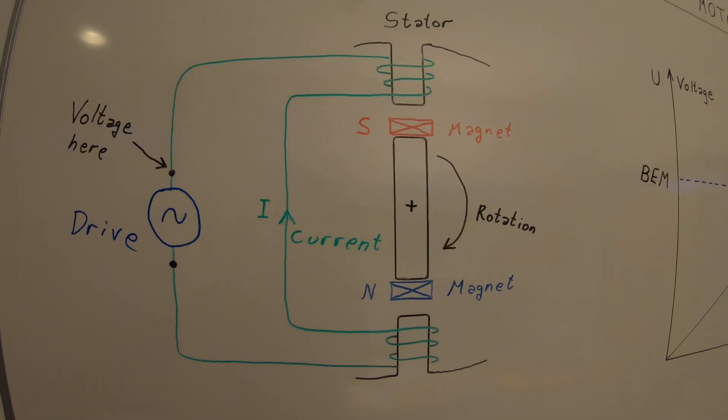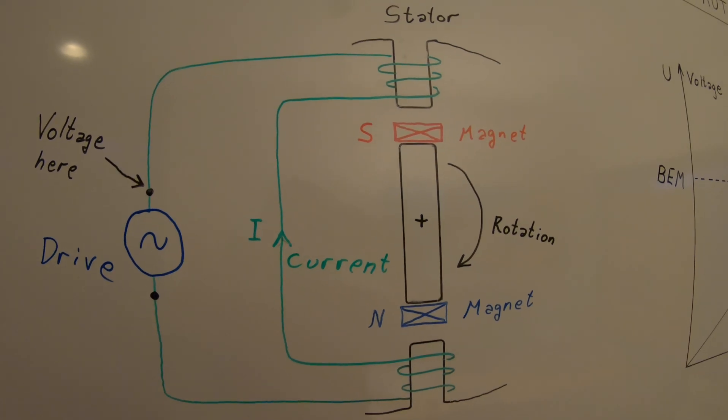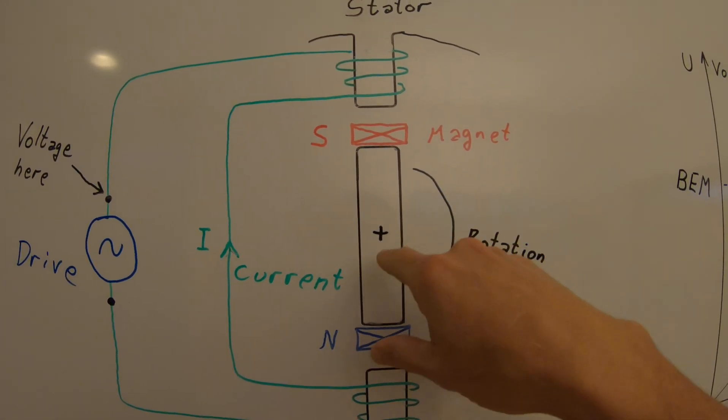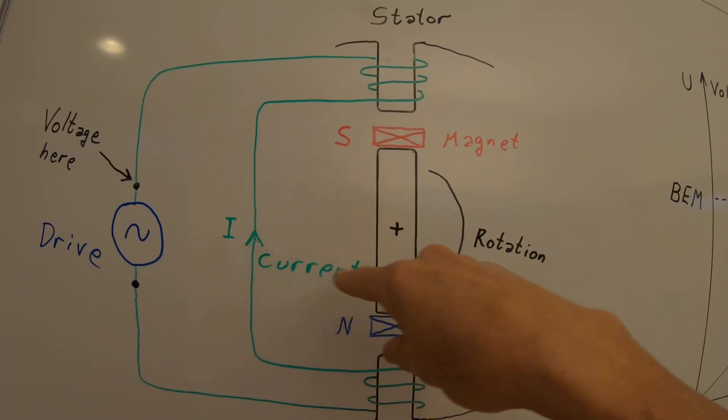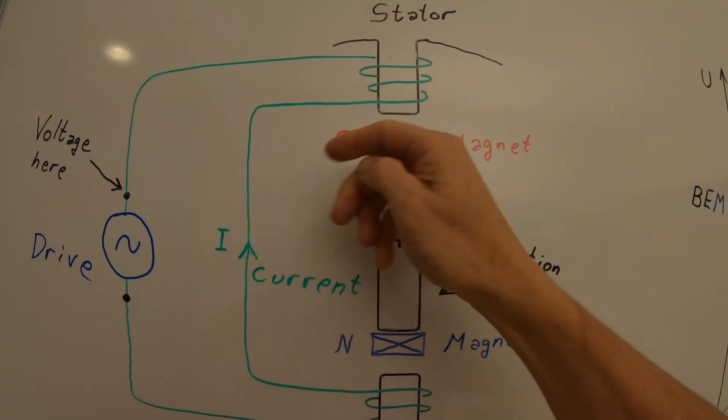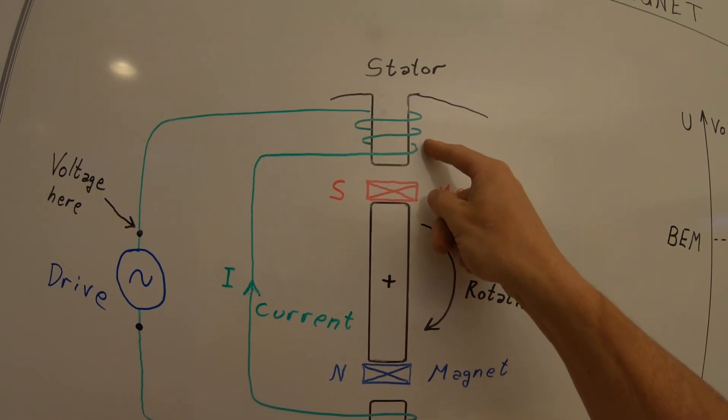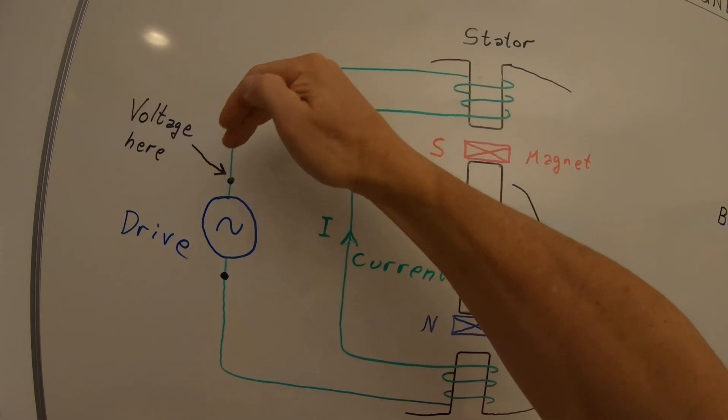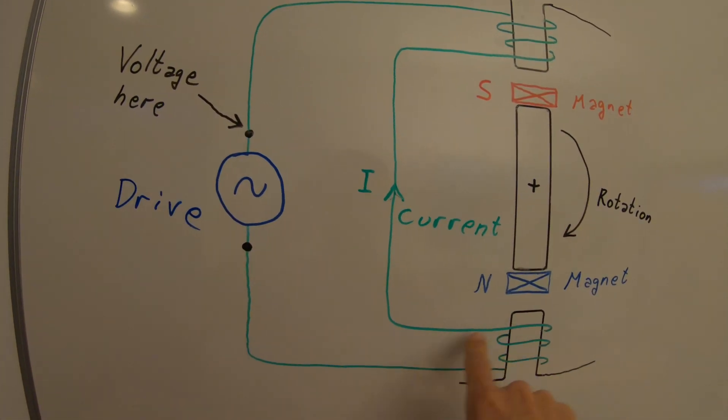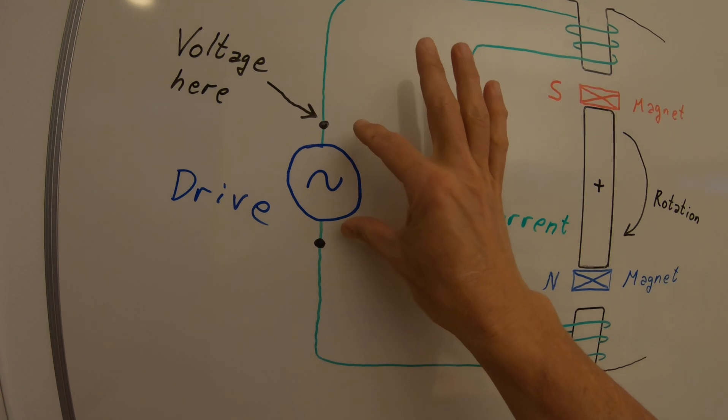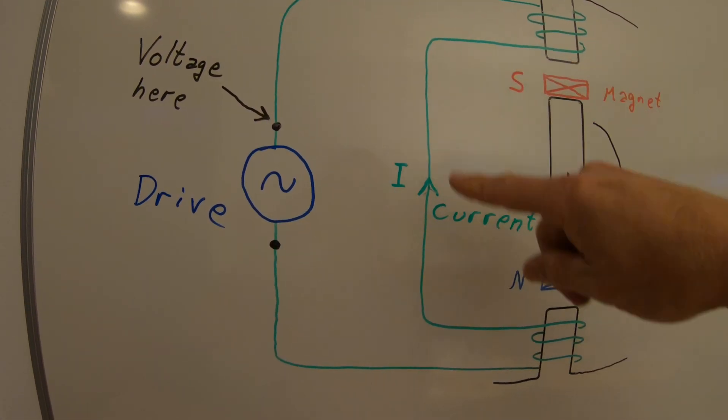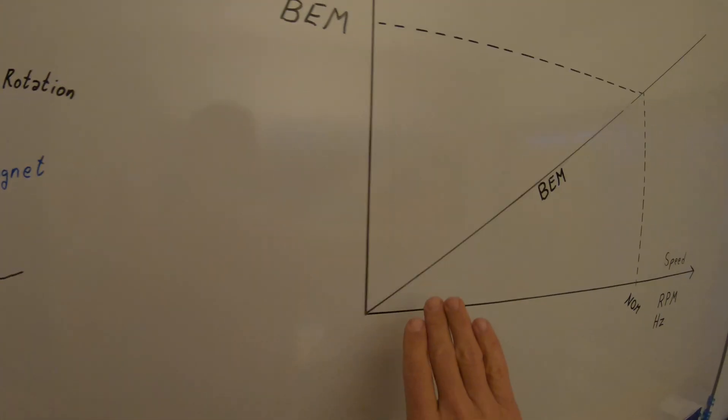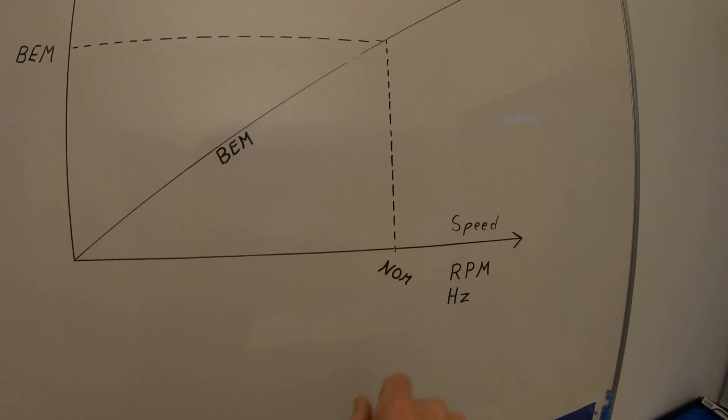If you're using the motor as a windmill, let's say we have a windmill here on the rotor, so it spins around and every time the magnet passing the stator winding there will be induced a voltage in the electrical circuit. So the driver here will see a voltage which is more or less linear to the RPM.